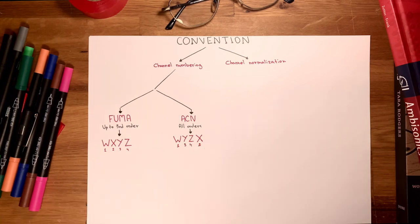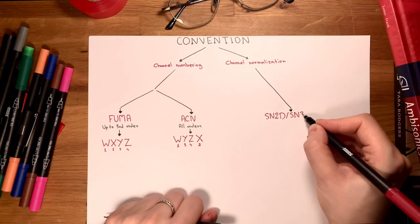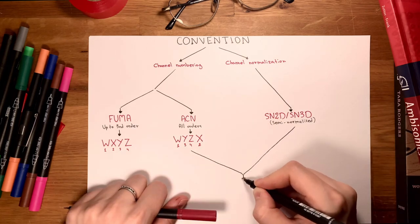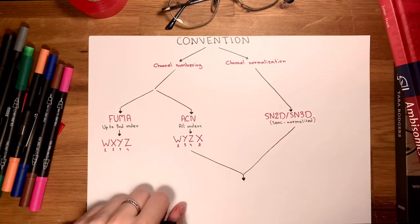When it comes to normalization, SN3D or SN2D are the most frequently used ones. SN stands for semi-normalized. In SN3D, no channel will ever exceed the peak value of the W channel. SN3D in the ACN channel order is a common choice for new software development, and the format consisting of these two is called AmbiX.